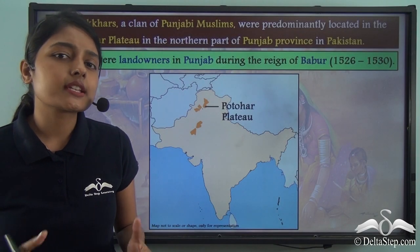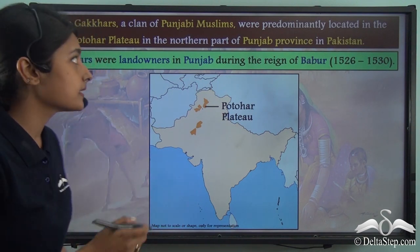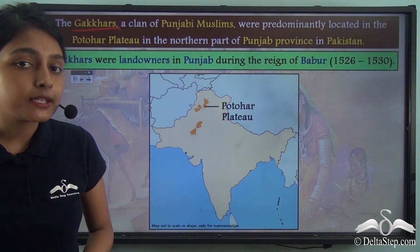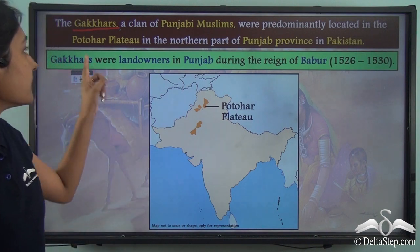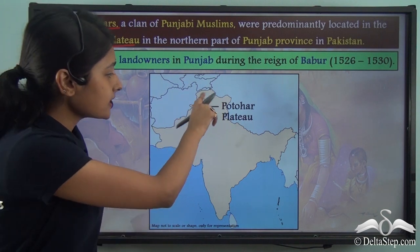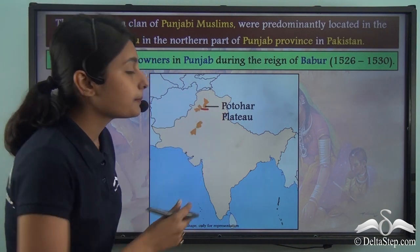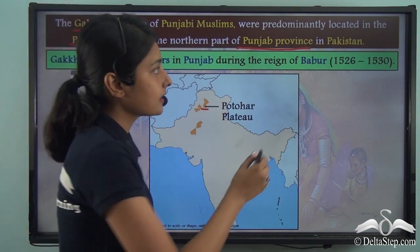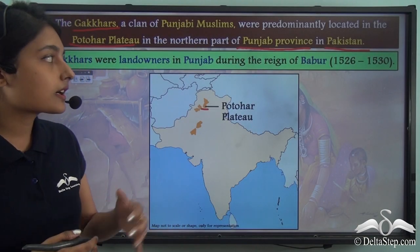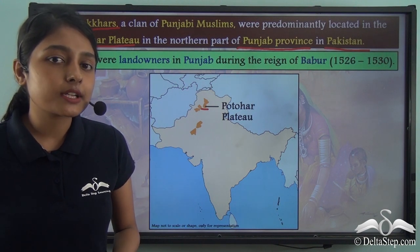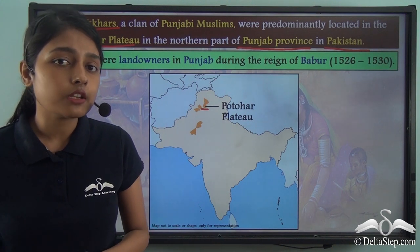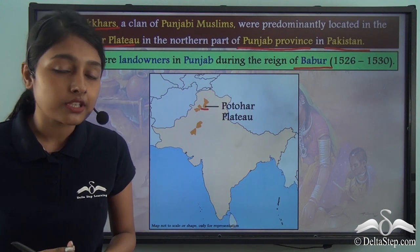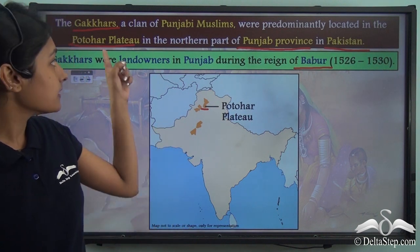In the same region of Punjab, there was another major and powerful tribe known as the Gakkars. The Gakkars were a clan of Punjabi Muslims who predominantly lived in the Potohar plateau, located in the northern part of the Punjab province — a region that now lies in Pakistan. The Gakkars were important landowners in Punjab during the reign of the Mughal Emperor Babur, and they exerted significant influence over the Potohar plateau region.